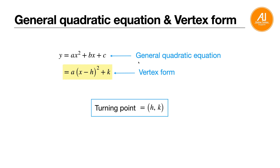You need to know what is a general quadratic equation and vertex form. From here you can tell y equals ax squared plus bx plus c. This is considered a general quadratic equation. And then your job is to change this form into vertex form.